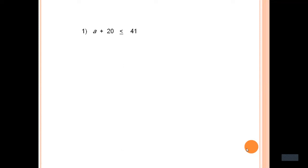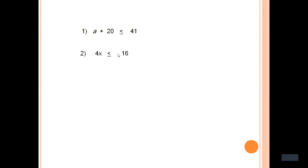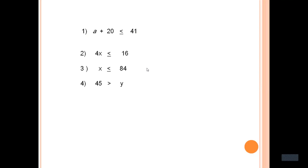Welcome students. Today we are going to learn compound linear inequality. In the previous lesson, we learned simple linear inequality. These are a few examples of simple linear inequality: the sum of a number and 20 is at most 41, or 8 plus 20 is less than or equal to 41; 4 times a number is less than or equal to 16; x is less than or equal to 84; 45 is greater than y.